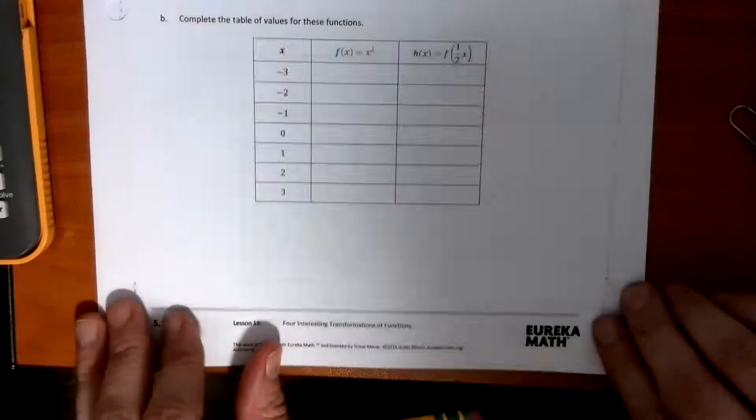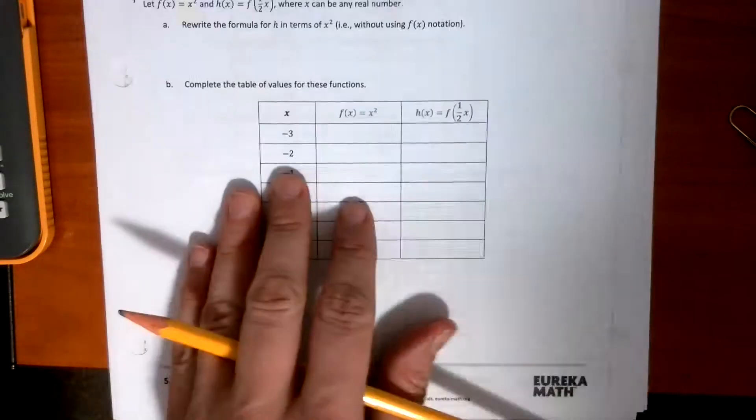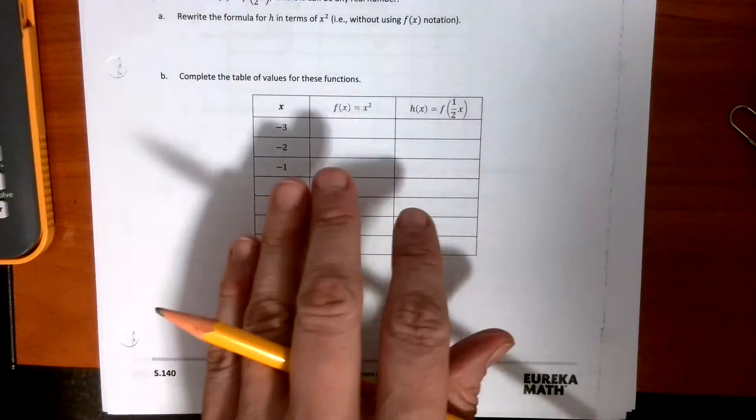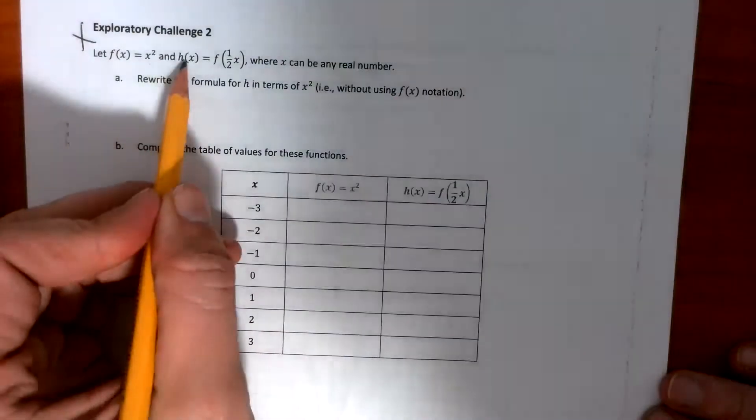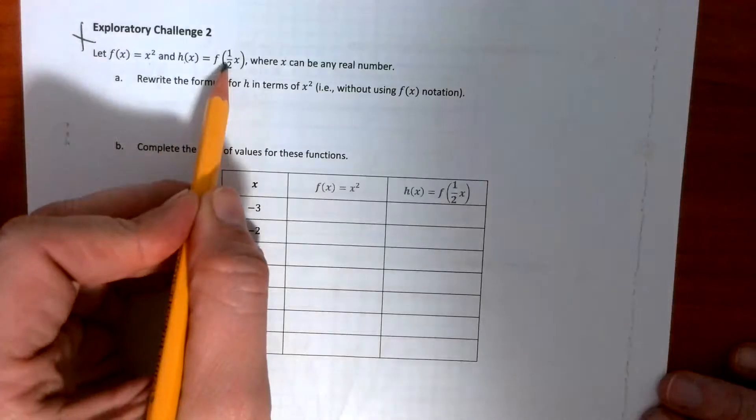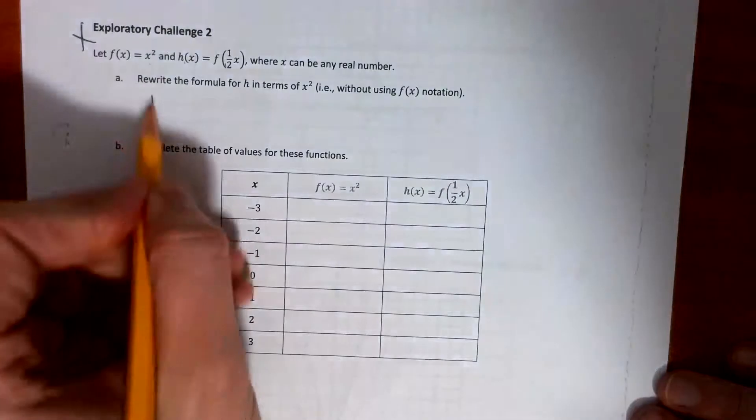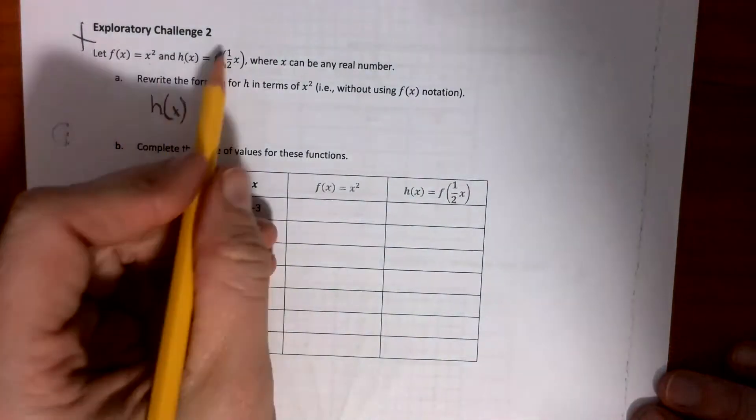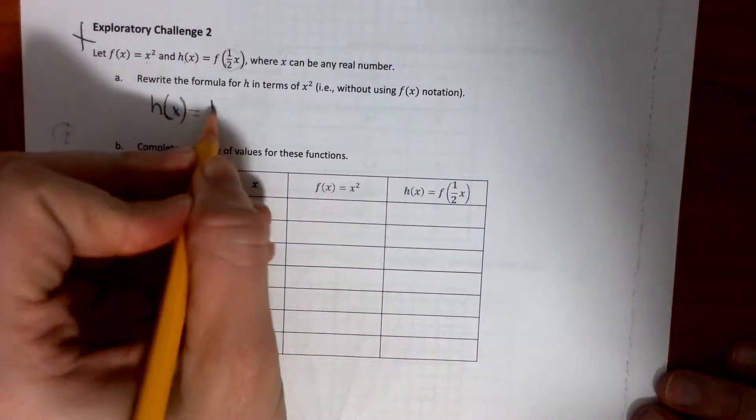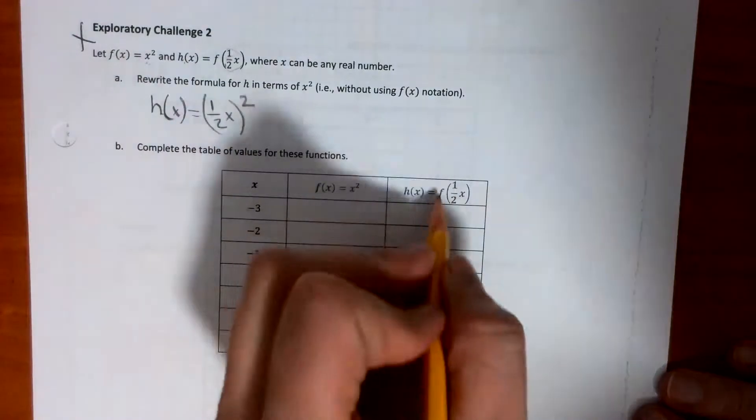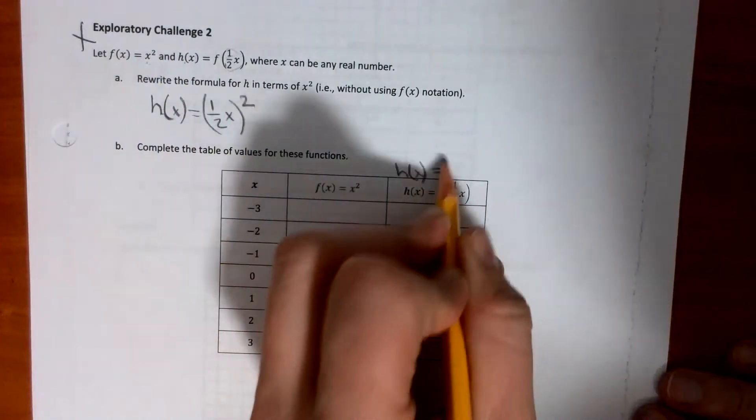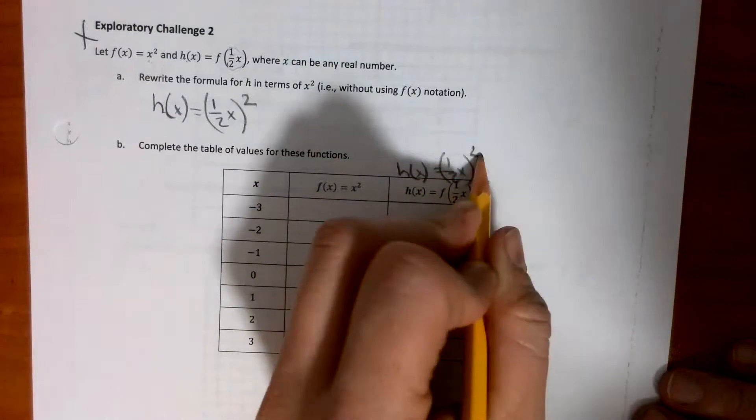All right, what else we got? Okay, so exploratory challenge number 2 is the one that we're looking at next. And the first thing we have to do is get the equation. So it says, let f of x equal this. h of x is this, okay? So now we have to make that equation. So h of x, and we have to put all of this in place of this. So that would equal 1 half x to the second power, okay? So it makes it easier. We go h of x equals 1 half x to the second power.